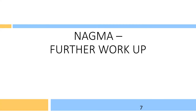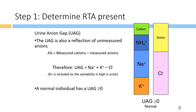After the diagnosis of NAGMA, further workup involves Step 1: determining if a renal tubular acidosis is present. Here we use another anion gap — not in the serum, but in the urine. The urine anion gap is also a reflection of unmeasured anions, calculated by taking measured cations subtracted by the measured anions. The formula is: urine sodium plus potassium minus chloride. Potassium is included because its variability is very high in urine.